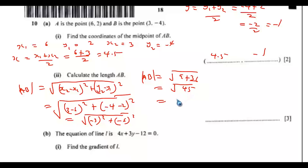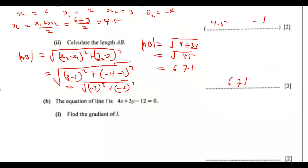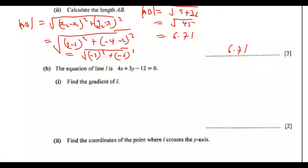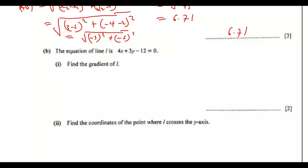The length AB equals square root of 45, or simply 6.71. Part b: the equation of line L is 4x plus 3y minus 12 equals 0. Find the gradient of L by writing this in the form y equals mx plus c.